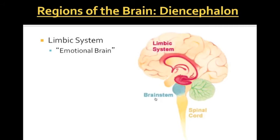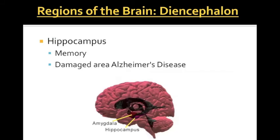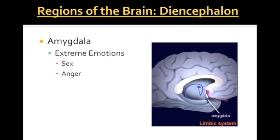Throughout the diencephalon is something called the limbic system — essentially our emotional brain. It contains the mammillary bodies, which are impaired by alcohol intoxication and can be damaged by alcohol abuse. Another area is the hippocampus, which plays a great role in memory and is the area damaged in Alzheimer's disease. There is also the amygdala, which is the area for extreme emotions such as sex or anger.